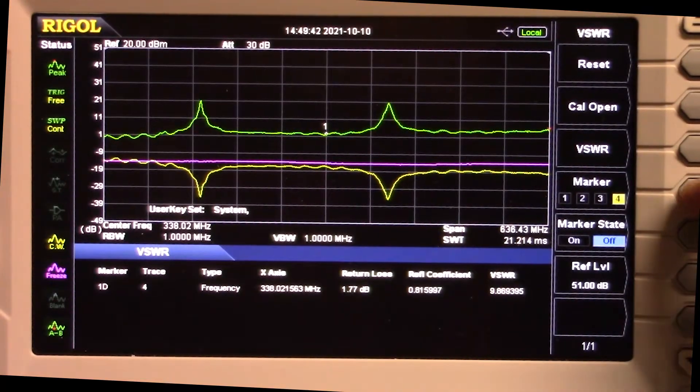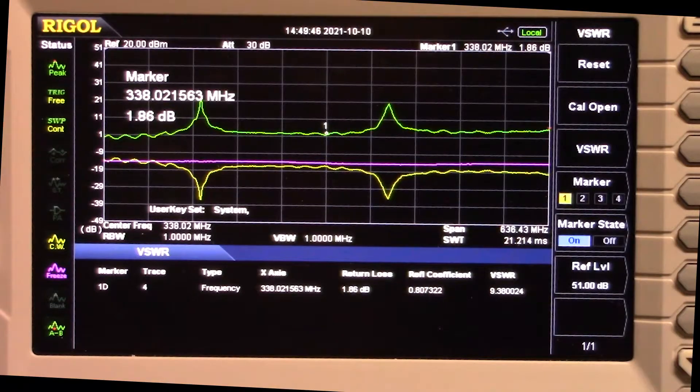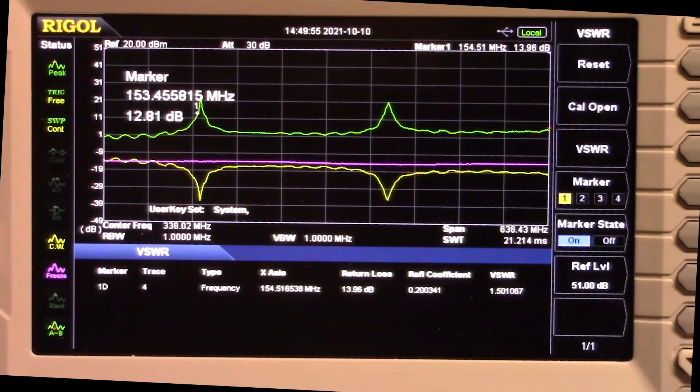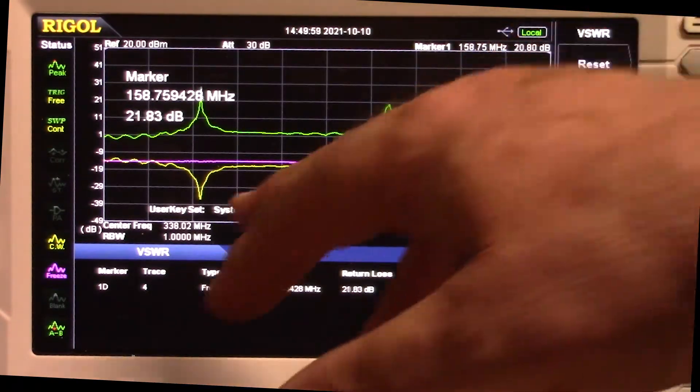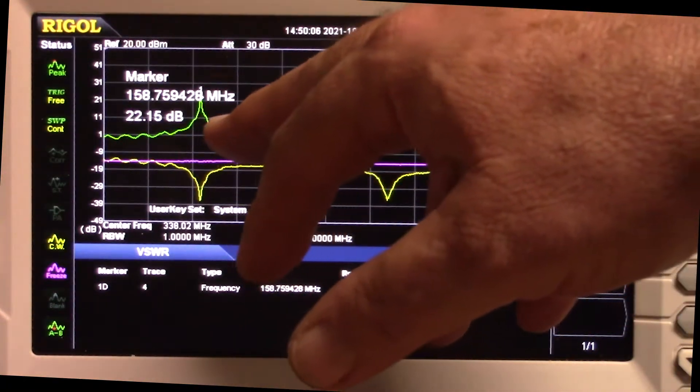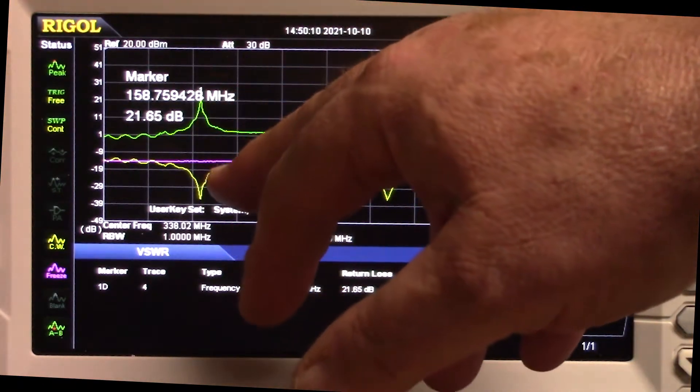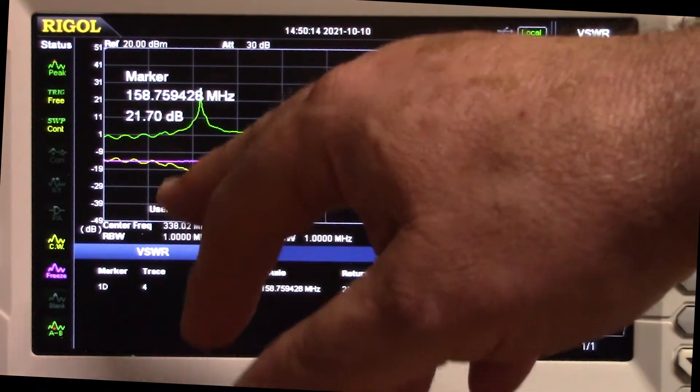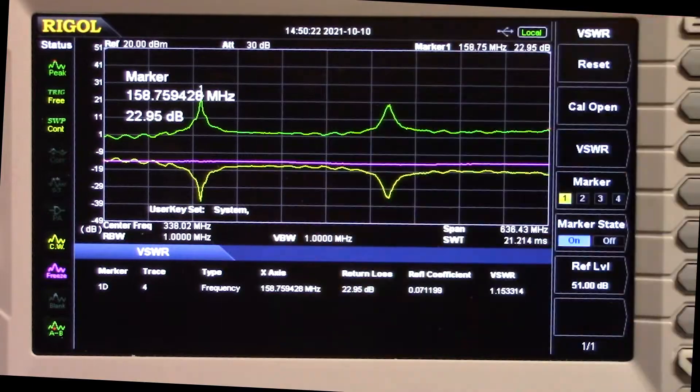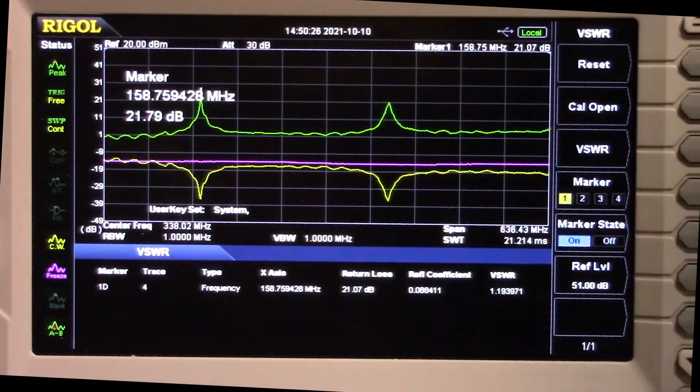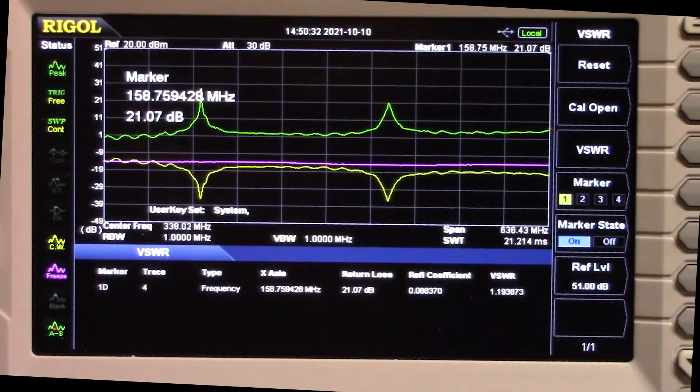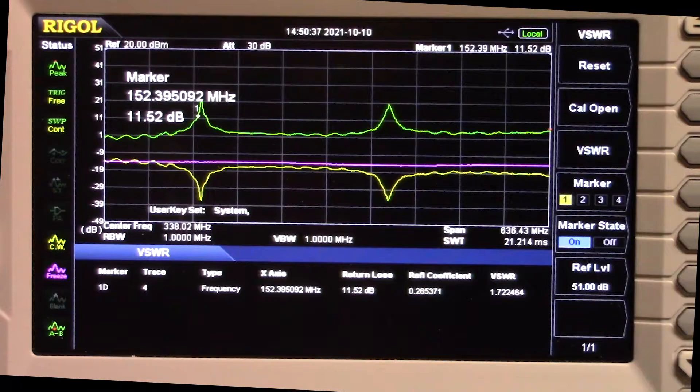We have up to four markers to mark a position. Marker one is set in some oddball place and I'm going to move it down to the 2 meter area. We're getting our best SWR here at 158.7. Let me point out something: the green line is return loss and the yellow line is our SWR curve. The purple line is our reference line. Our return loss is around 19 to 20 dB down. I'm going to move this marker down into actual 2 meter area.